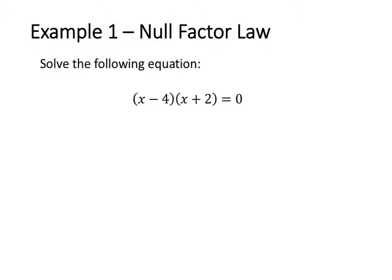In the first example, we want to solve the equation (x minus 4)(x plus 2) is equal to zero. Applying the null factor law, I know that either x minus 4 is equal to zero or x plus 2 is equal to zero, because when I'm multiplying these terms together and my answer is zero, then one of those terms has to equal zero.